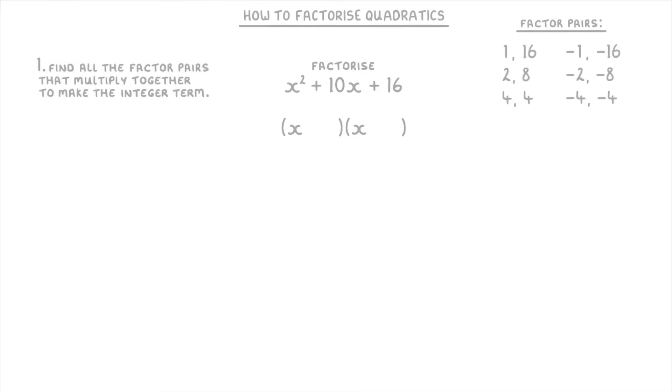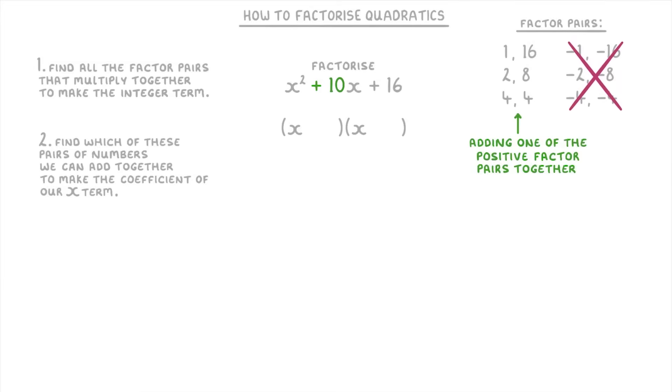Once we've written out all of our factor pairs, our next job is to find which of these pairs of numbers we can add together to make the coefficient of our x term, which in this case is the positive 10. Because this 10 is a positive number we can tell straight away that we're going to be adding one of the positive factor pairs together, so we can ignore these negative ones.